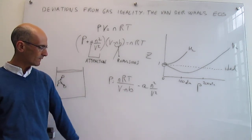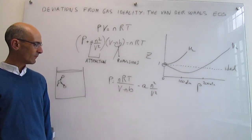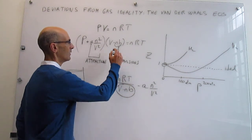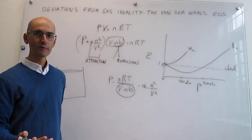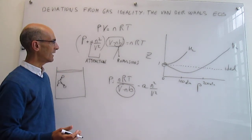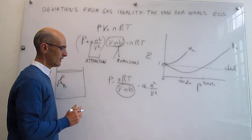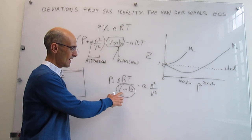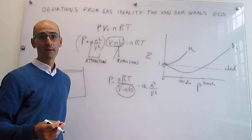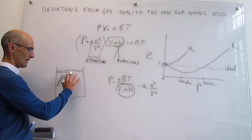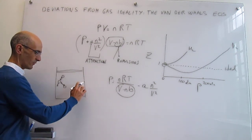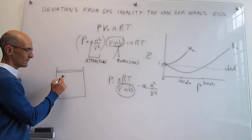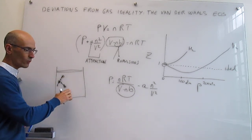What about the repulsion term? This term comes from repulsion in the following way. The term (V - nb) represents the volume available for the particles to move in. V is the volume of the container, and nb is the volume occupied by the particles themselves. The difference between those two is the volume through which the particles can actually move.